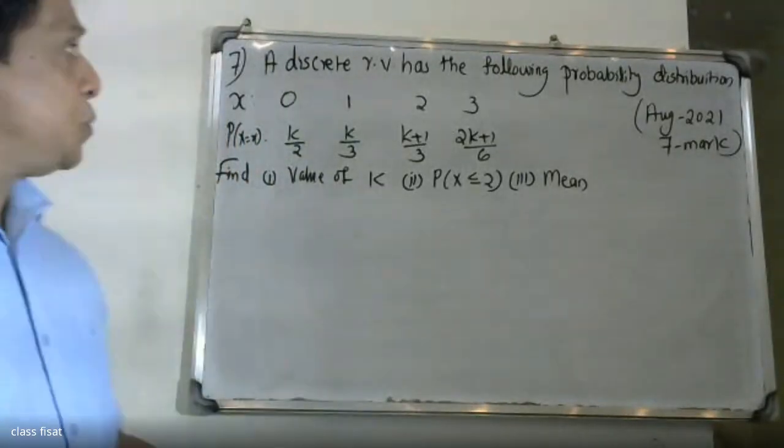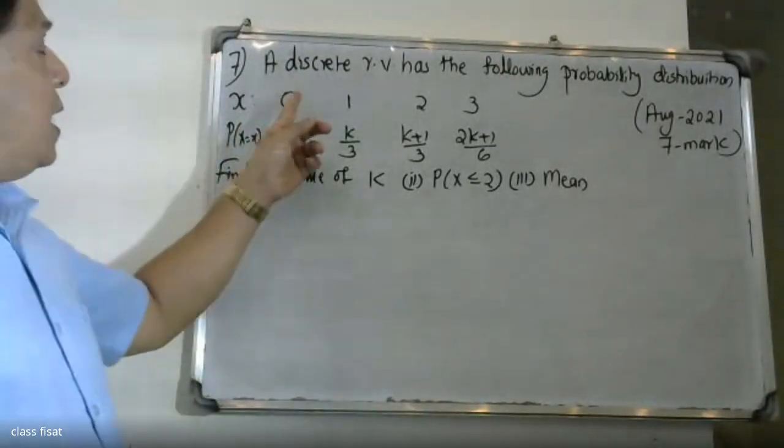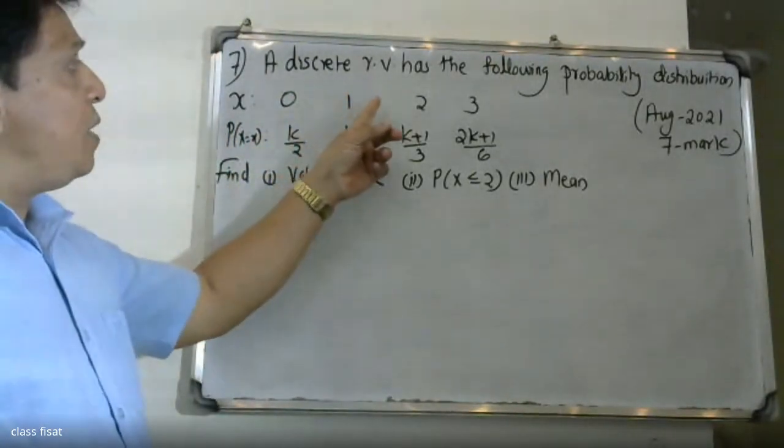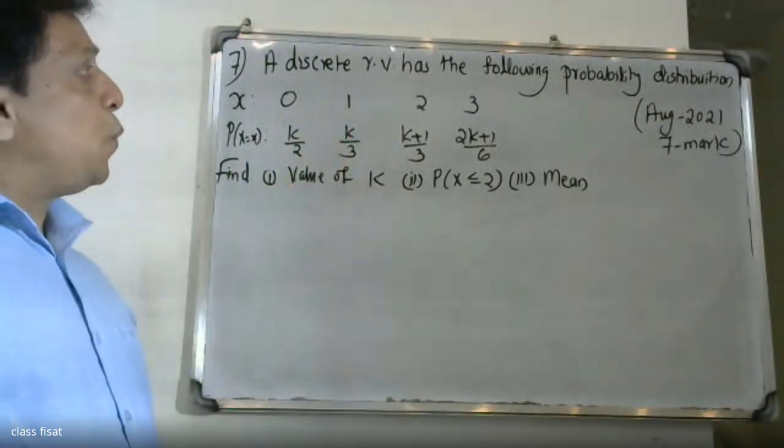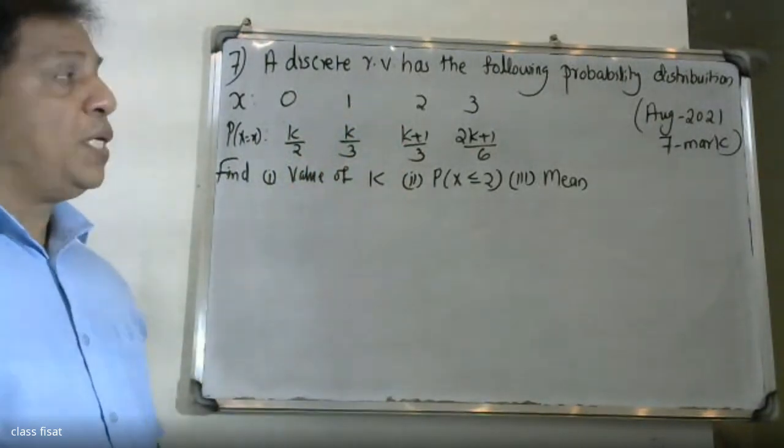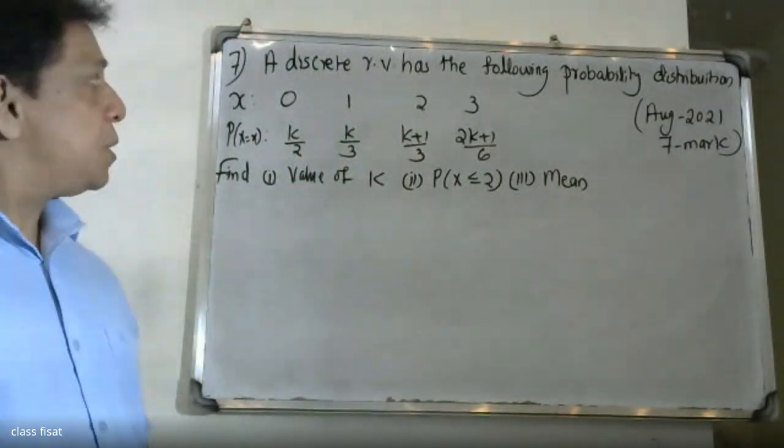Good morning, students. At the university question of dhana. A discrete random variable has the following probability distribution.